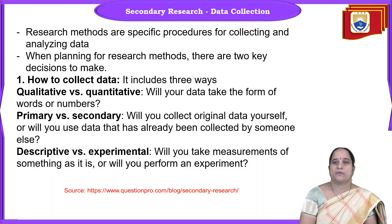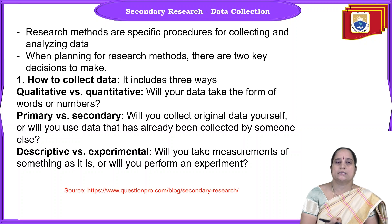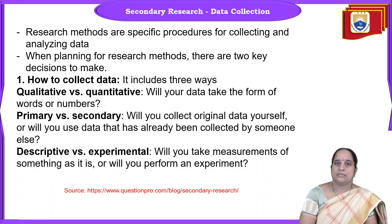The third one is descriptive versus experimental. Descriptive means whenever you are planning to describe certain characteristics or attributes — it may be related to an individual or any type of incident. For example, if you consider how we describe a person, we talk about the color of their hair, eyes, complexion — everything in a descriptive manner. That type of data is known as descriptive data. Sometimes we collect information by conducting experiments, and that has to be decided by the investigator before starting the research design.